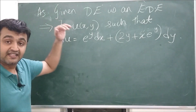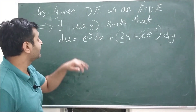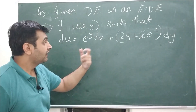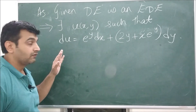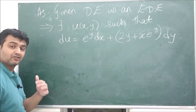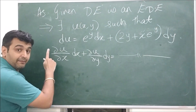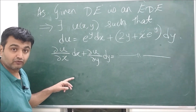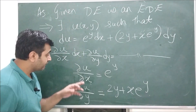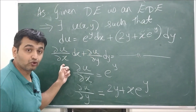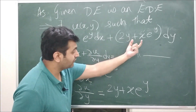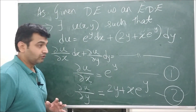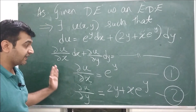Since the equation is exact, by definition there exists u such that its total derivative equals the differential form. Applying the definition of total derivative: (∂u/∂x) dx + (∂u/∂y) dy = M dx + N dy. Equating coefficients, we get two equations: ∂u/∂x = e^y (equation 1) and ∂u/∂y = 2y + xe^y (equation 2). We now use these two equations to find u.